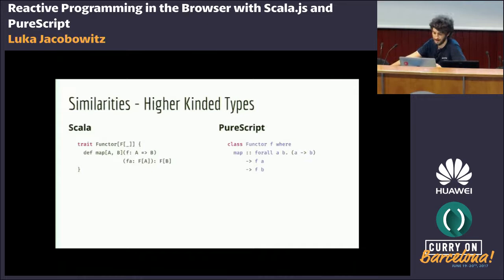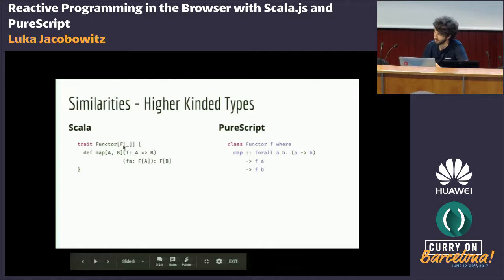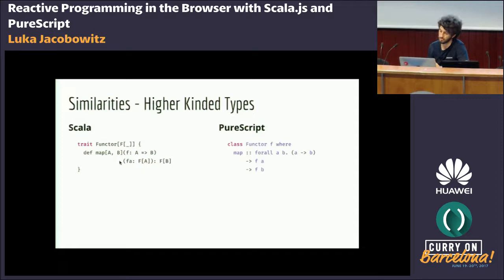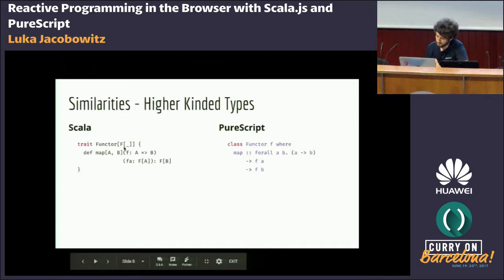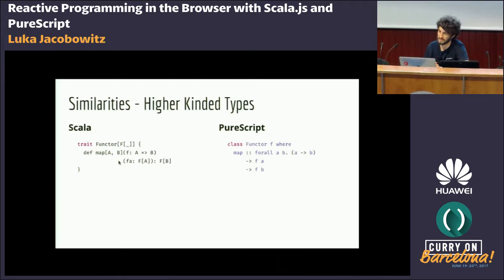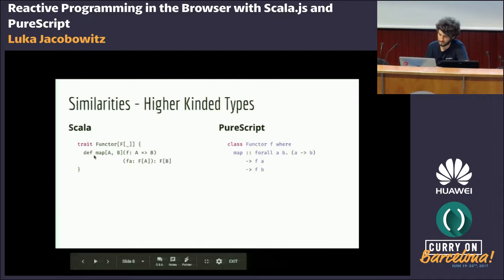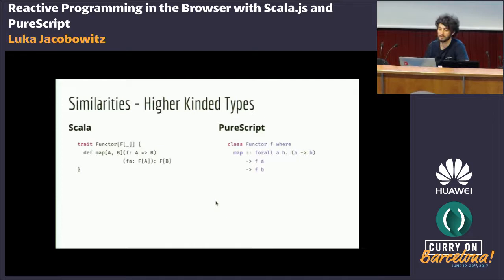Both languages also have higher-kinded types, a very rare feature in programming languages. It means we can abstract over type constructors. Our type F here isn't actually a type — it's a type constructor, meaning it's a function that takes a type and returns another type. F of Int would be a type, or F of String. A functor is basically anything we can map over. On the left we define a trait Functor for any type constructor; on the right we define what we call a type class in PureScript.